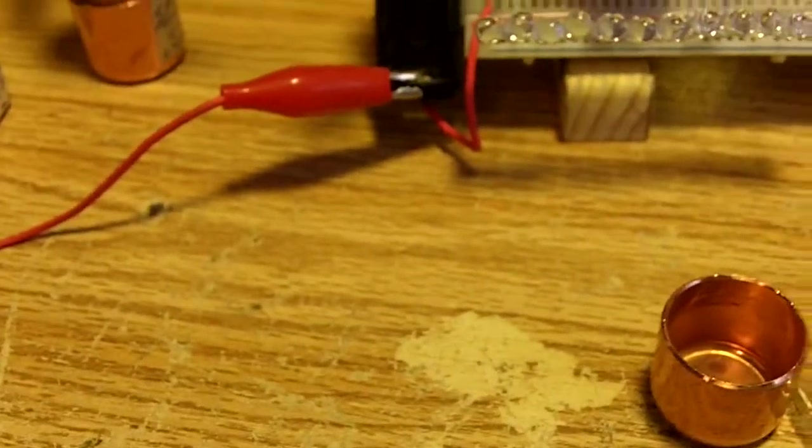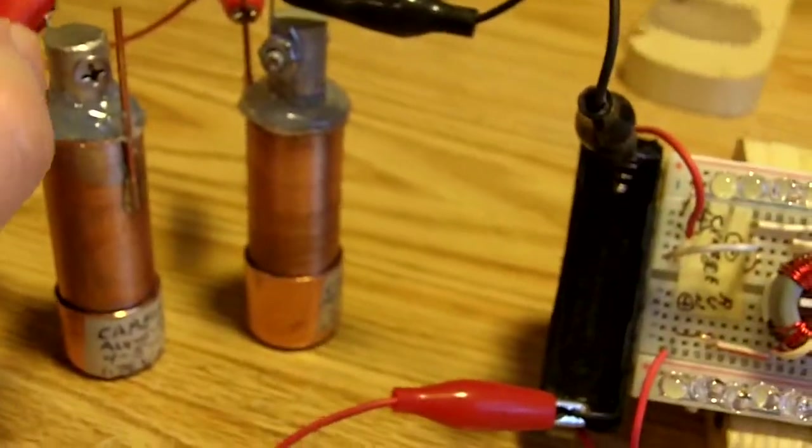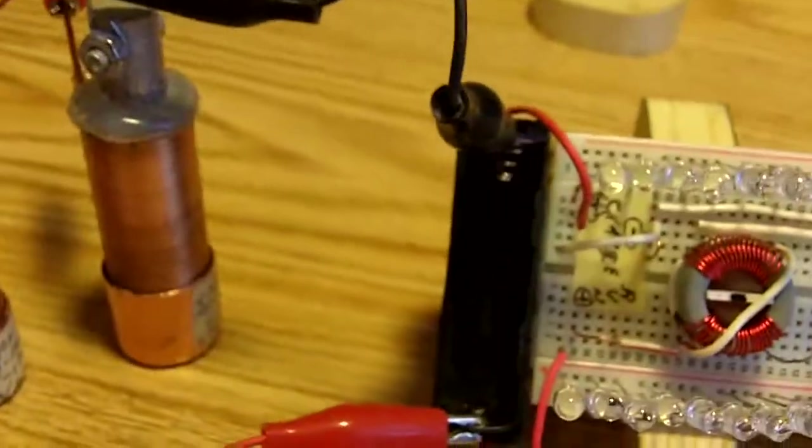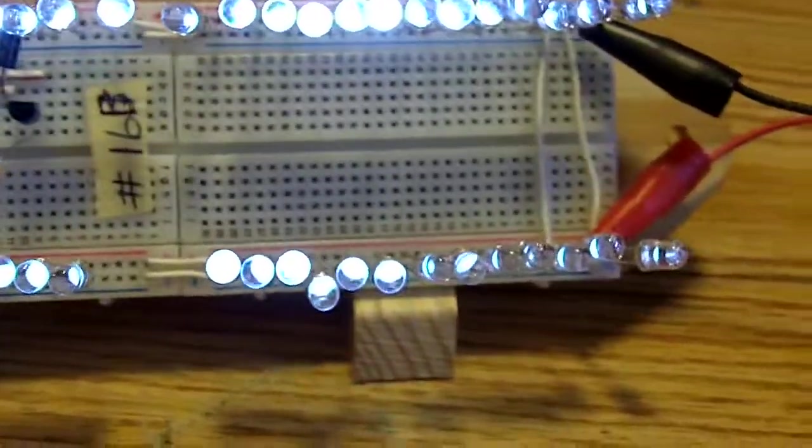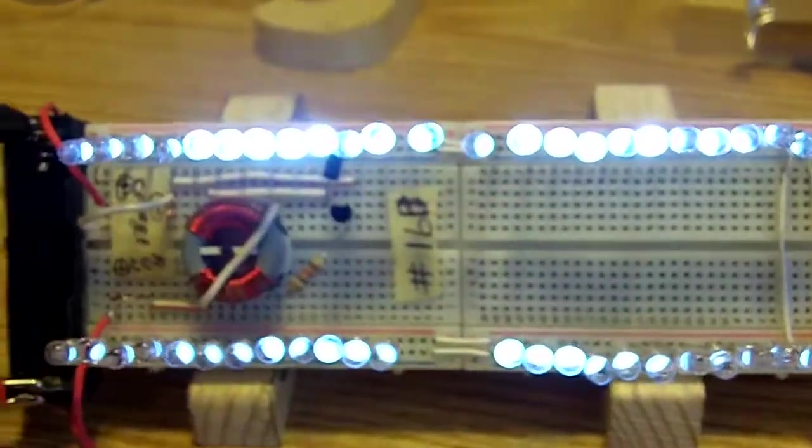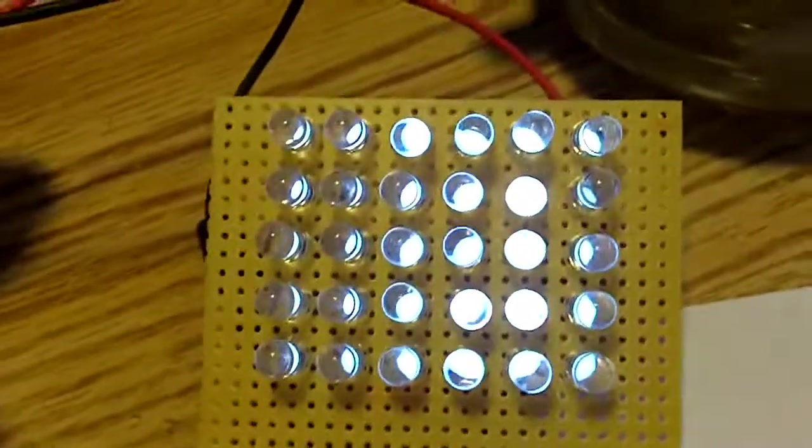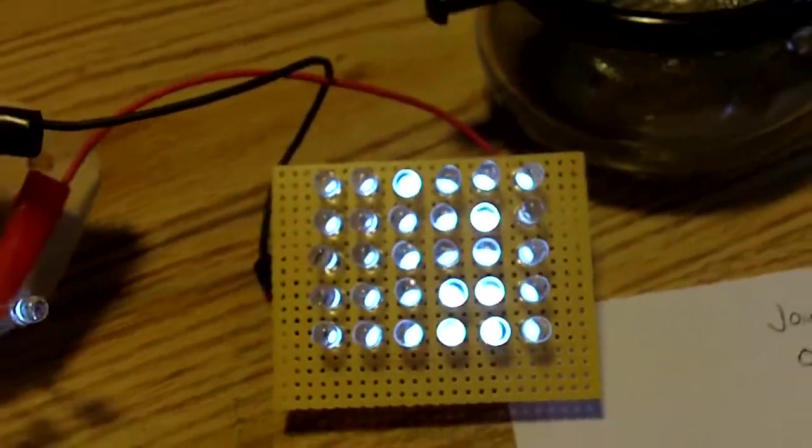We'll hop back over here. Get this out of the way for a minute. We're going to take and hook up the power to the homemade little cells here. There we go. Now you can see the 50 LEDs are all bright as can be, and the 30 of them over here. They're really doing great.